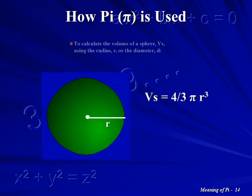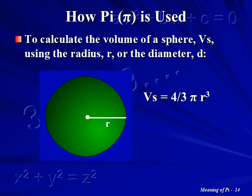To calculate the volume of a sphere, VS, with the radius, R, use the equation VS equals 4 thirds Pi times R cubed.